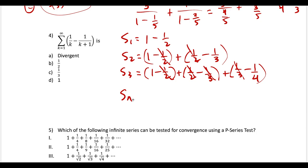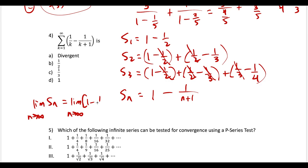So the nth partial sum is 1 − 1/(n+1), since the trailing denominator is always one more than the subscript. The actual sum is the limit as n goes to infinity of the nth partial sum: the limit as n→∞ of (1 − 1/(n+1)). Since 1/(n+1) goes to zero, this equals 1 − 0 = 1. Choice D is our solution.